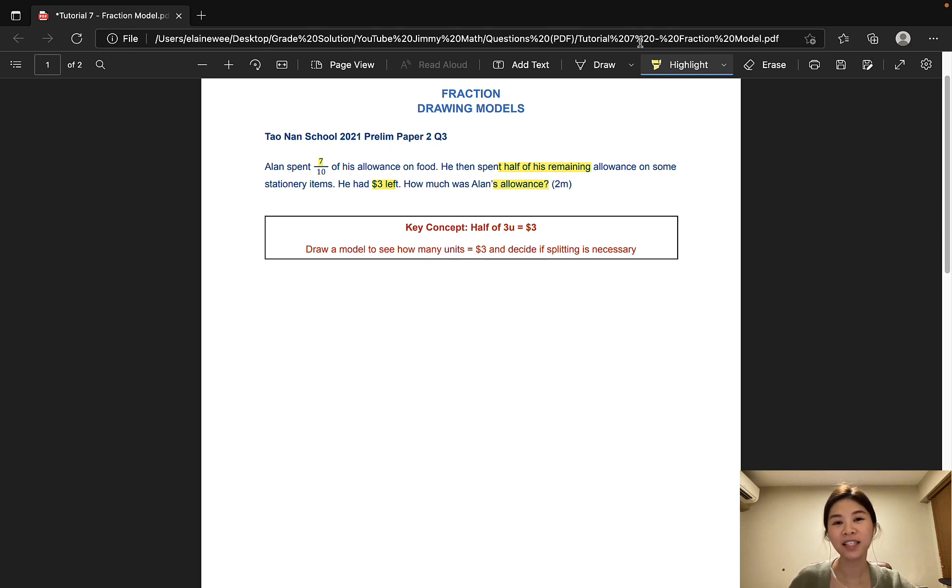Now, this is a basic fraction question that requires splitting, which you would see later. The key concept is that half of three units is three dollars. Since he had used seven units of his allowance on food, he had three units left. He spent half of the remaining, which is half of three units, and he had three dollars left, which means the other half of the three units equals to three dollars. In order to visualize this, we should encourage students to draw a model.